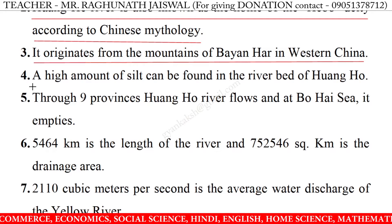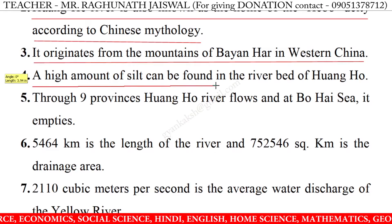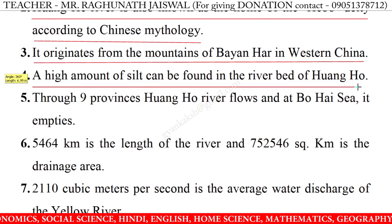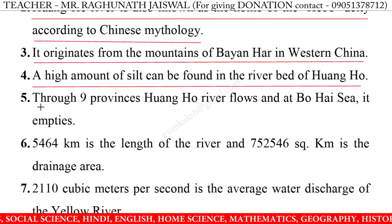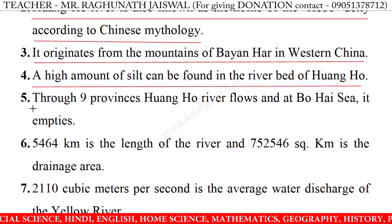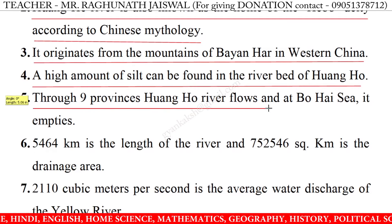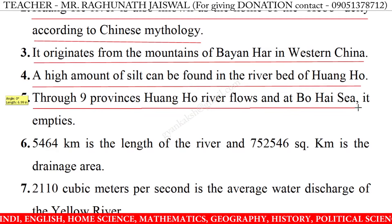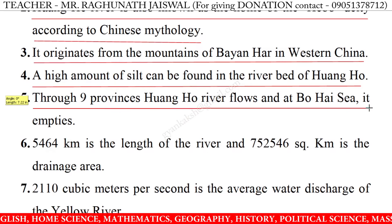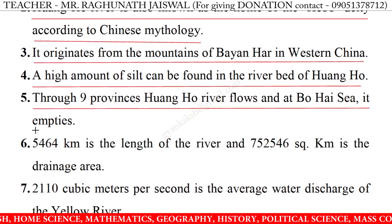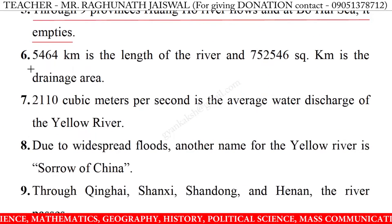4. A high amount of silt can be found in the riverbed of Huanghe. 5. Through 9 provinces, Huanghe River flows and empties at the Bo Hai Sea.